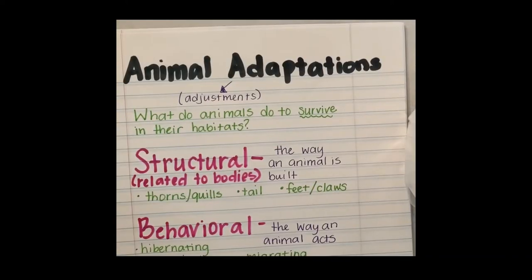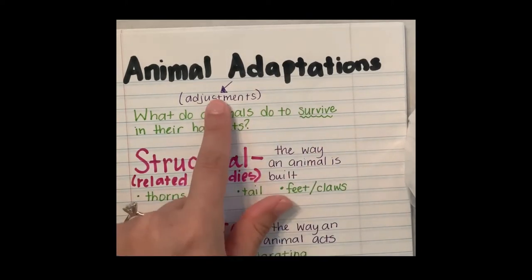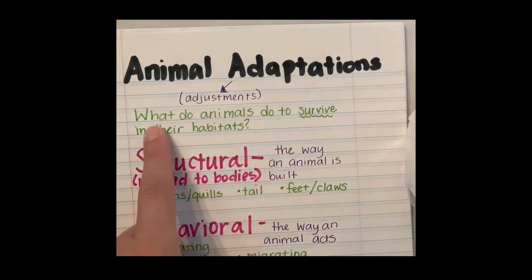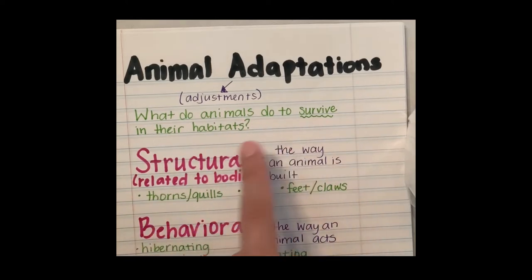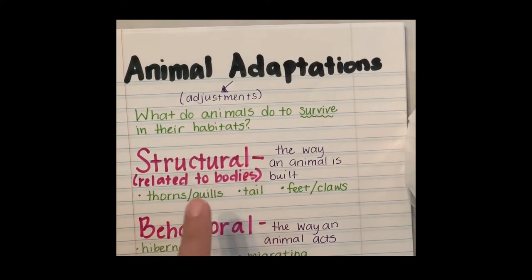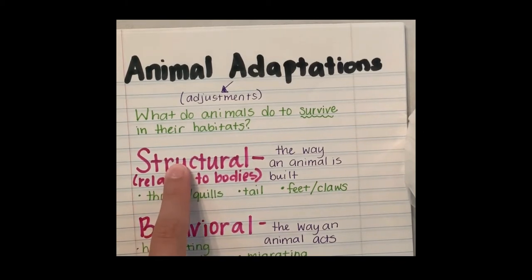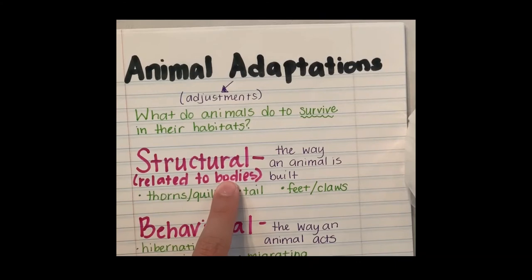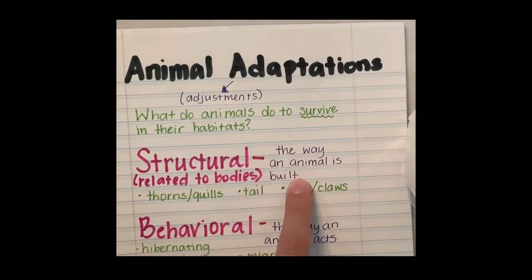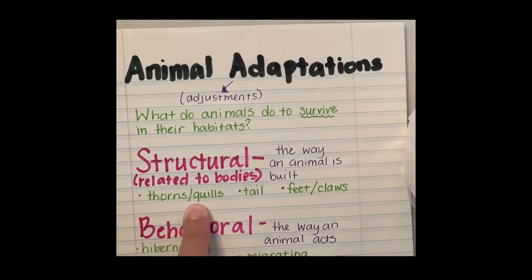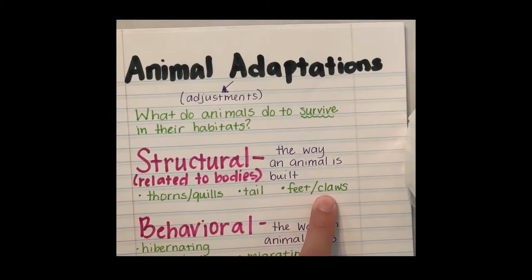We've been talking a lot about animal adaptations, which are just adjustments that animals have. Our first question: what do animals do to survive in their habitats? Well, they have structural adaptations and behavioral adaptations. The structural adaptations are related to their bodies — these are their physical features, things that we can see, the way the animal is built. For example: thorns or quills like a porcupine, a tail, feet or claws. We know that predators use their claws to help hunt their prey.